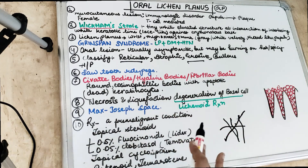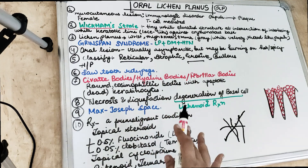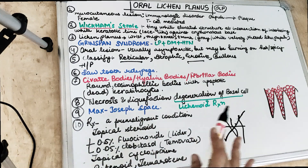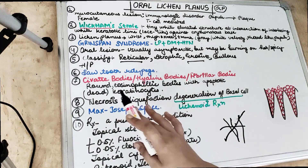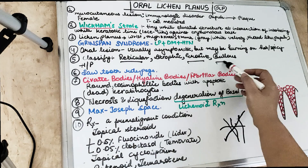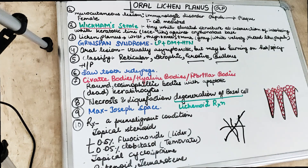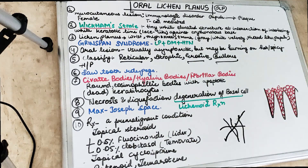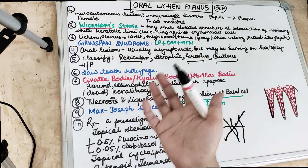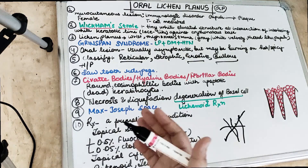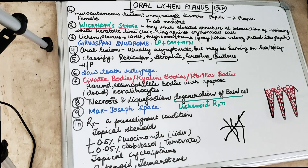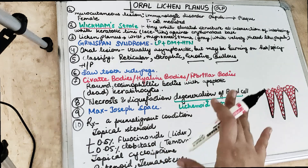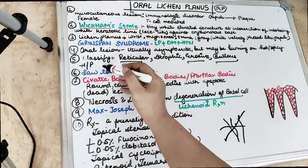The erosive form of lichen planus has a high malignant transformation potential. It shows ulceration with pseudomembranous covering, combined with keratotic and erythematous lesions. The bullous form features vesiculobullous lesions combined with reticular or erosive lesions of lichen planus. These represent the main classification of oral lichen planus.